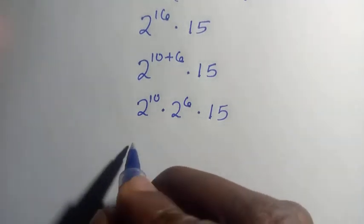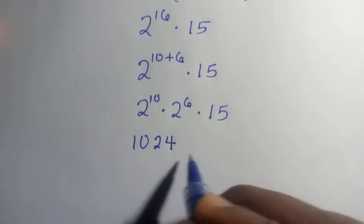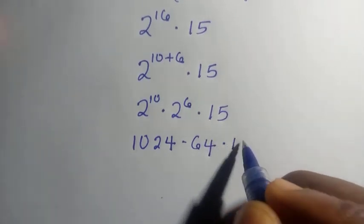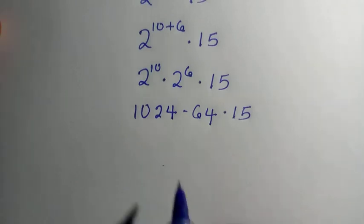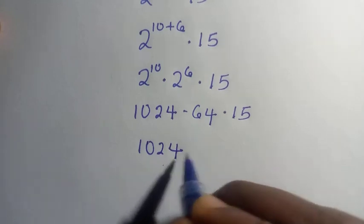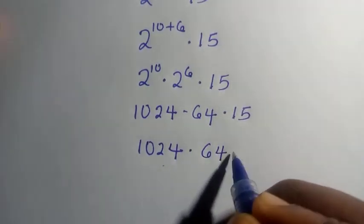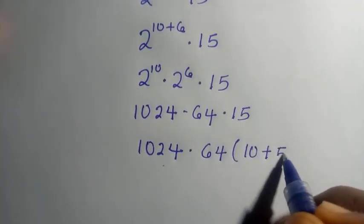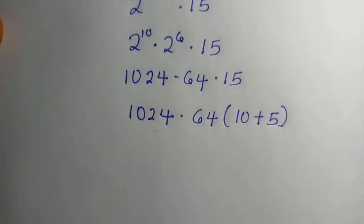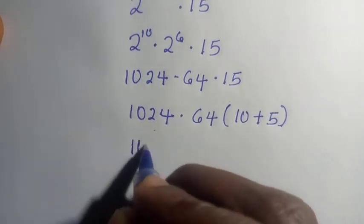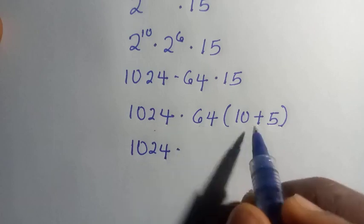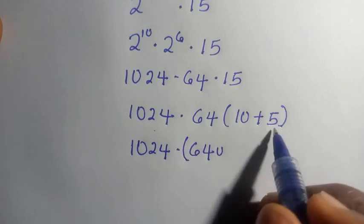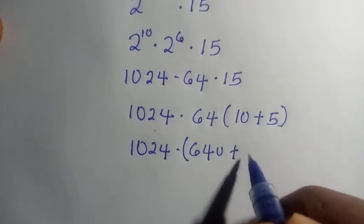Now, 2 to the power of 10 equals 1024, and 2 to the power of 6 equals 64, so we have 1024 multiplied by 64 multiplied by 15. We split 15 as 10 plus 5, so we compute 1024 multiplied by 64 multiplied by 10 plus 5. That gives us: 64 multiplied by 10 equals 640, and 64 multiplied by 5 equals 320.